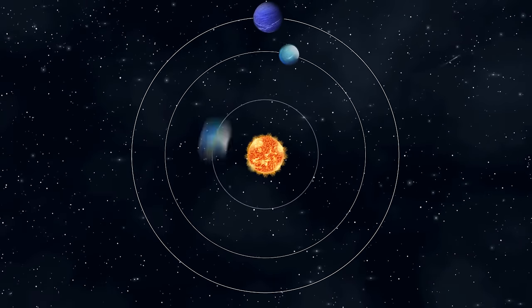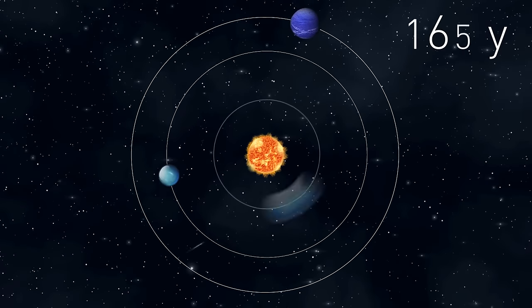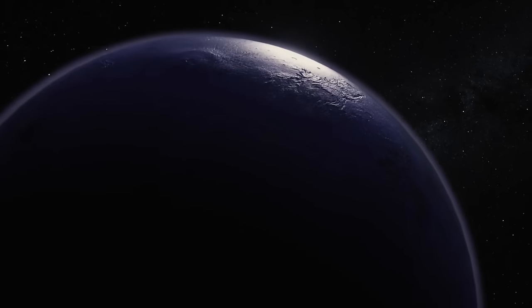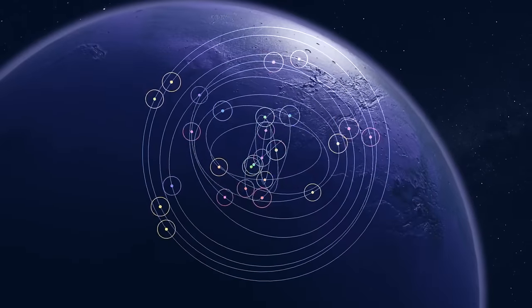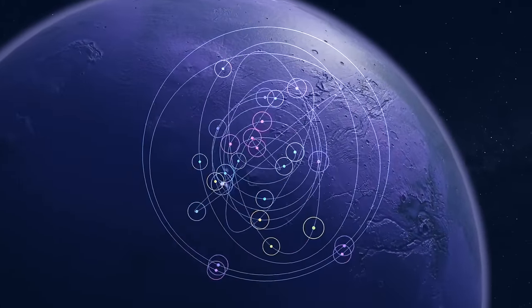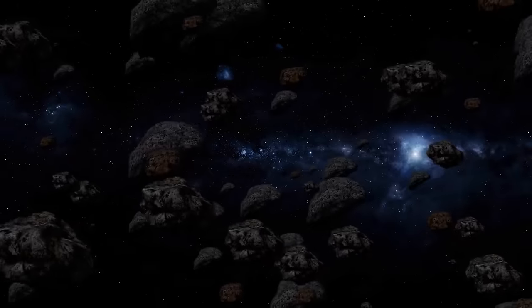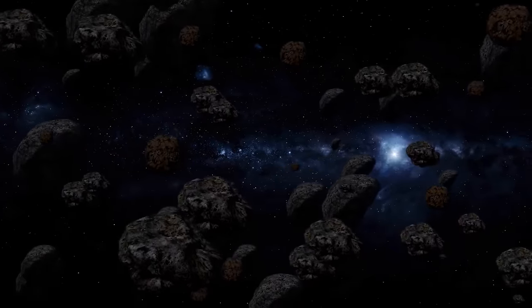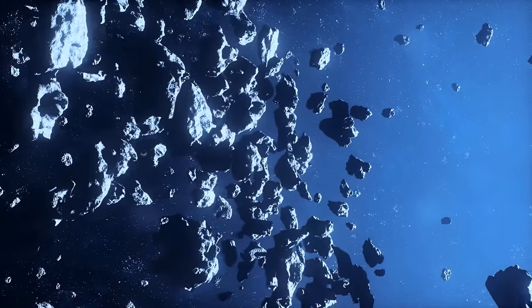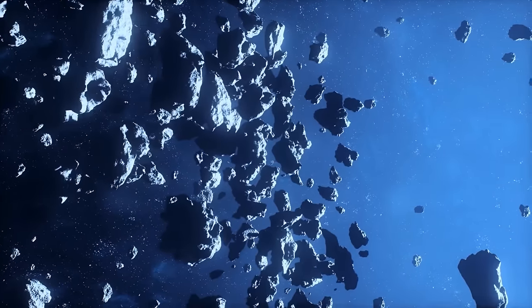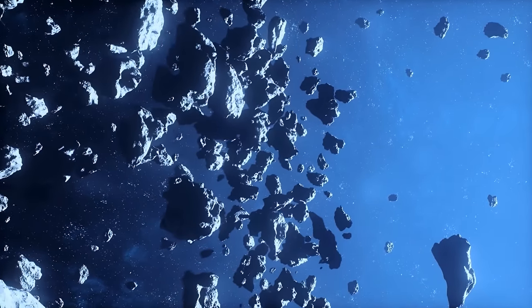By comparison, a year on Neptune lasts 165 Earth years. Something this big moving out there beyond Neptune could explain the unusual orbits of smaller objects in the Kuiper Belt. The Kuiper Belt is the area of our solar system beyond Neptune and where it orbits. And there are most likely many asteroids, comets, and some other smaller bodies there, mostly made of ice.